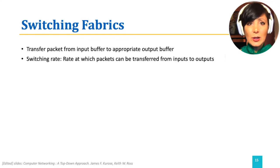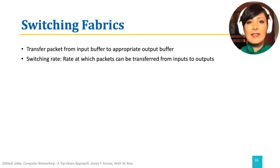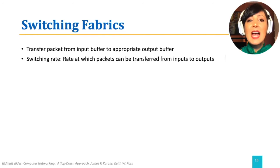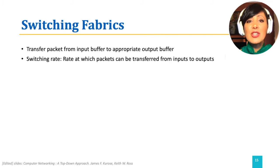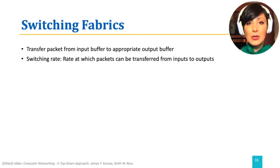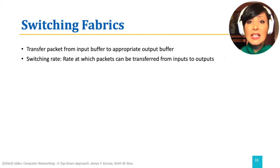Now, let's take a look at the switching fabric. The switching fabric transfers packets from input ports to the appropriate output ports. The rate at which the switching takes place decides the rate of service at the router, and is different based on the technology used for the switching.